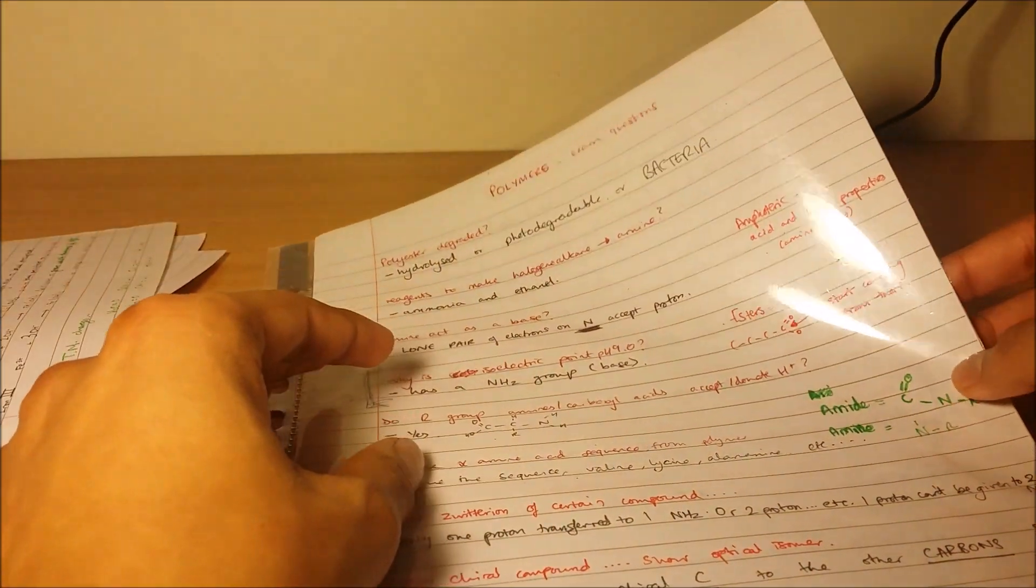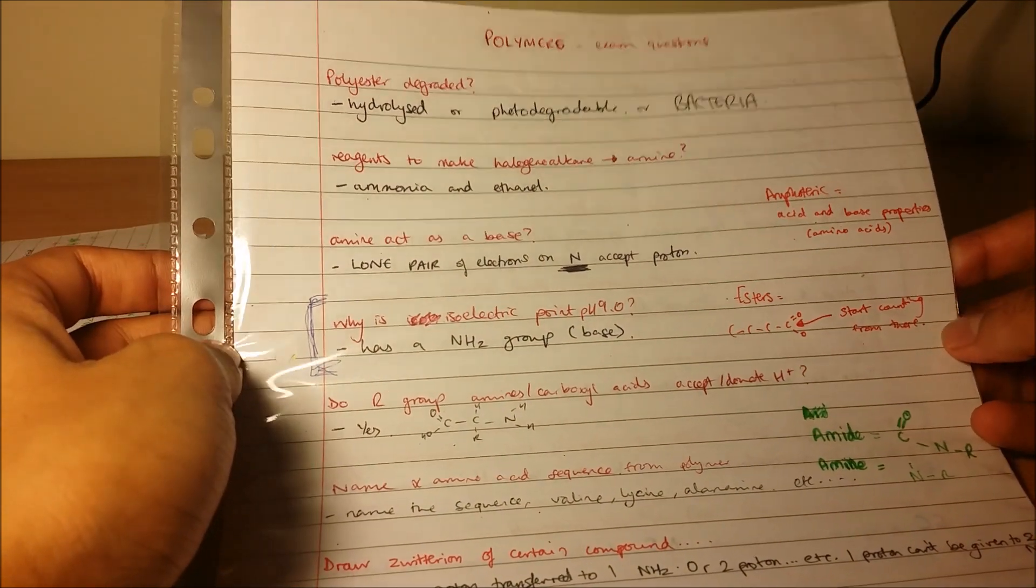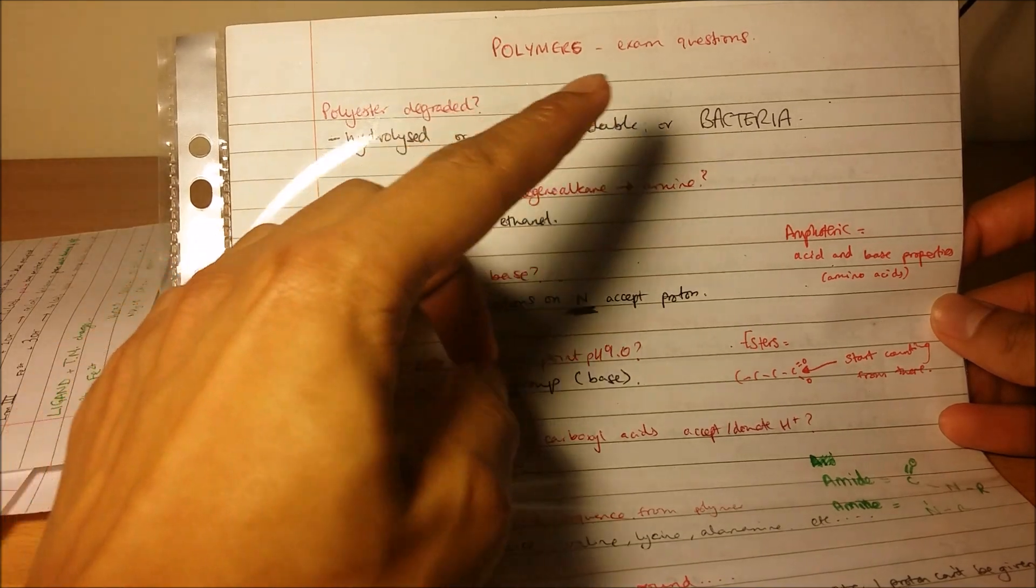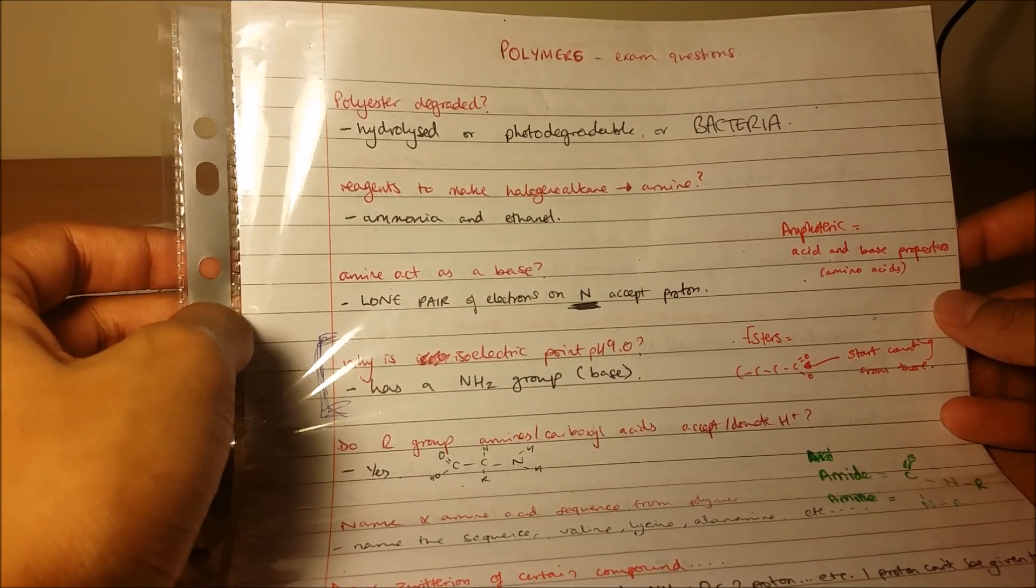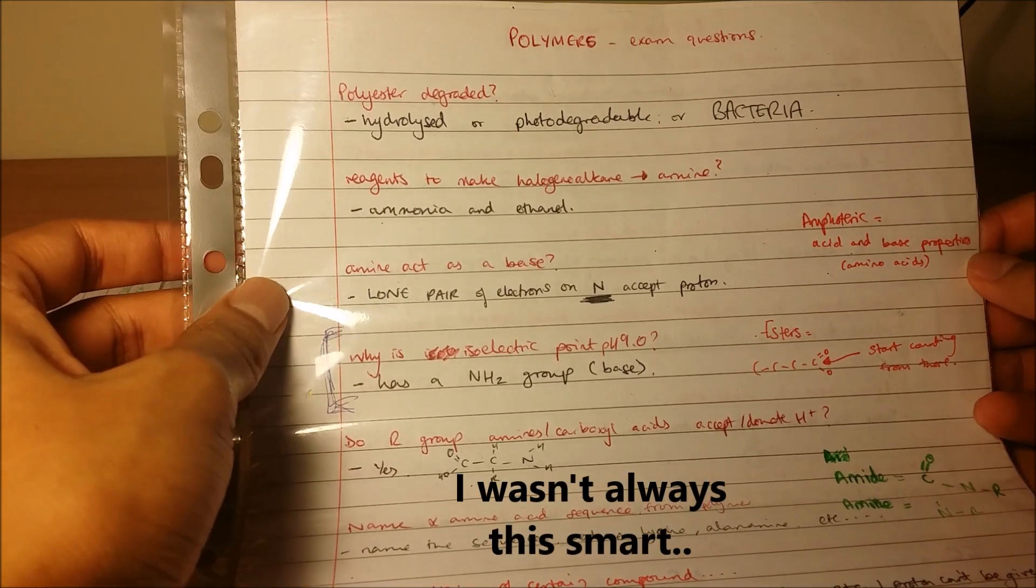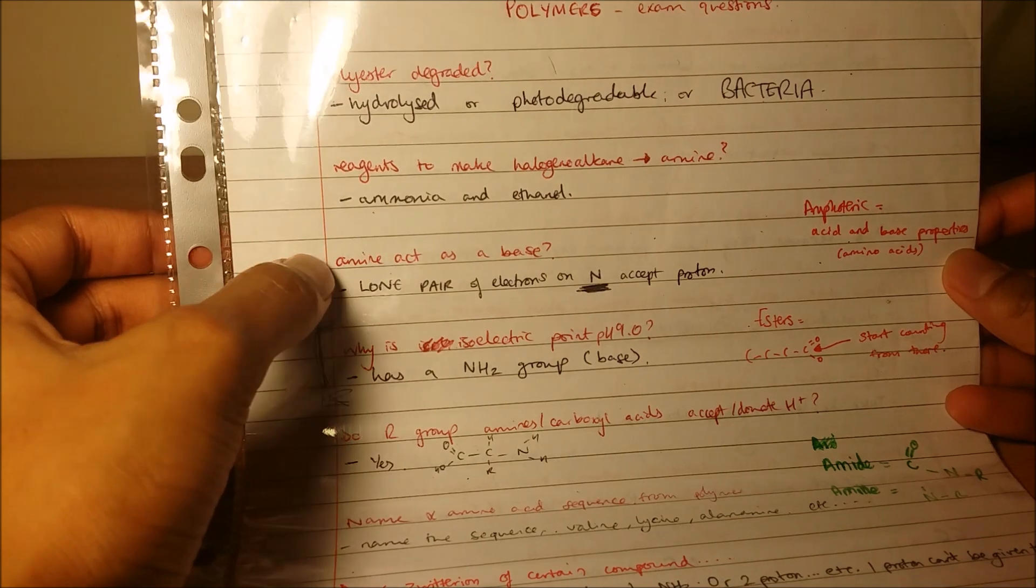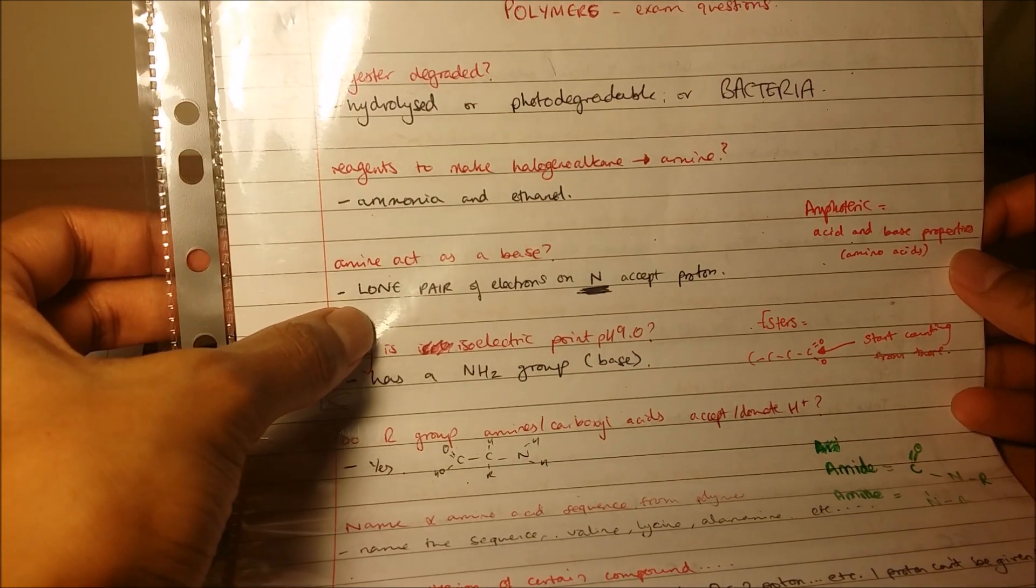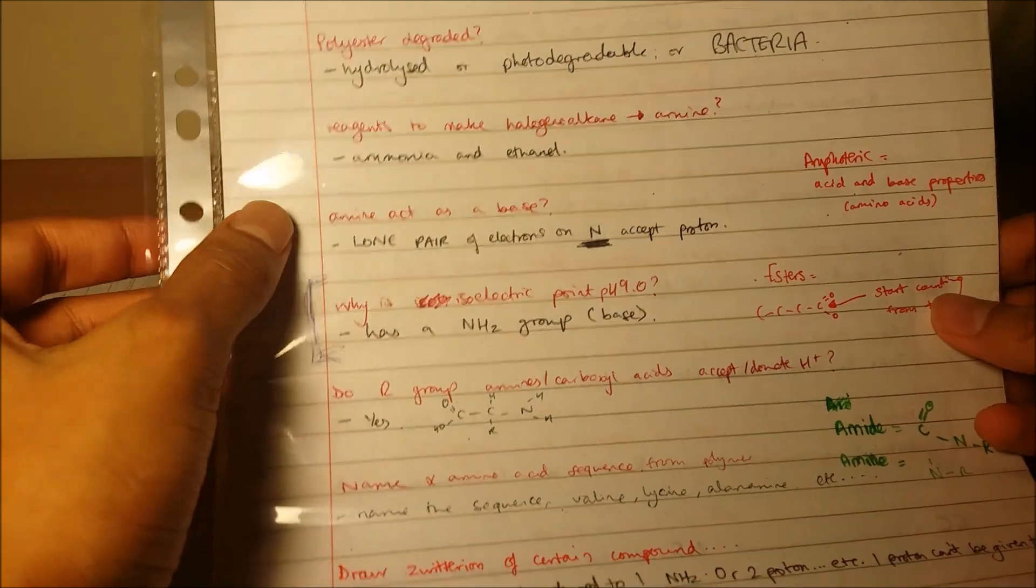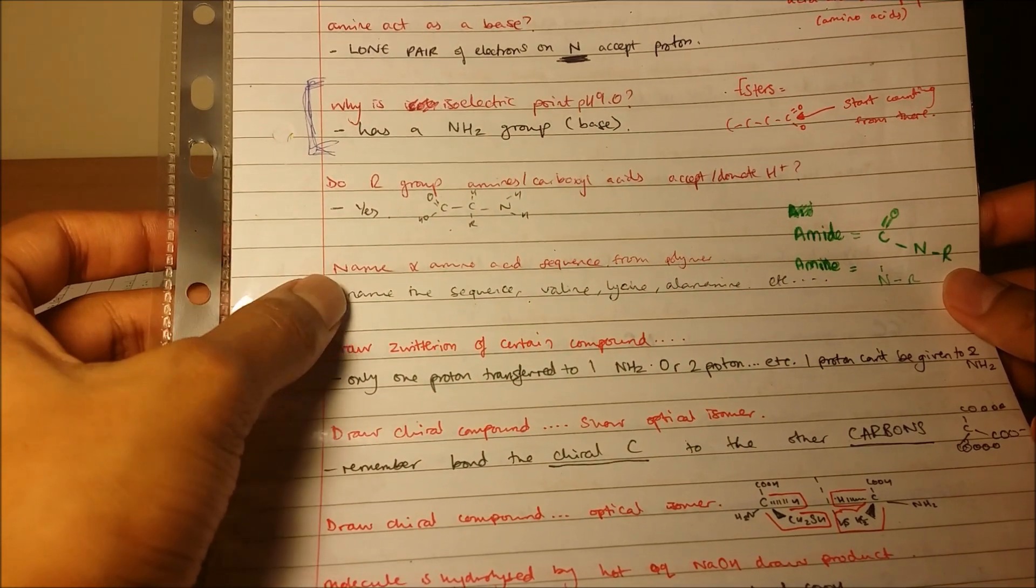Now for chemistry, past papers are really important, and this is what I found really helpful. This was probably what got me there in my chemistry exam. I wrote down the topic and exam questions. Basically, when I was doing the past papers, I got quite a few questions wrong. The questions I got wrong I wrote down in red, and then the answer I wrote down in black. For example, 'Why do amines act as a base?' The mark scheme answer was because the lone pair of electrons on the nitrogen accept the proton. The day before my exam I read through these about a few times, and the questions I got wrong came up again and I eventually got them right.